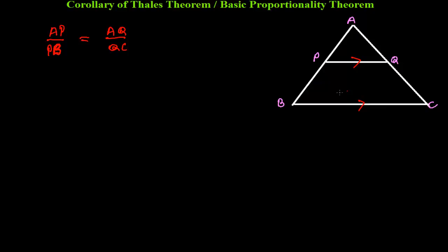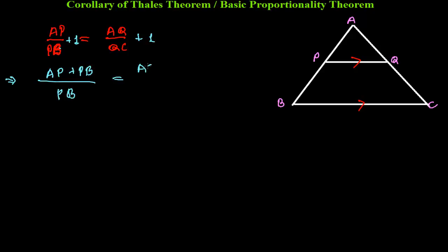Now I'm going to do a little experiment. Suppose I add 1 to both sides — that doesn't affect the equality. On the left side, AP/PB + 1 gives (AP + PB)/PB, and similarly on the right side, AQ/QC + 1 gives (AQ + QC)/QC.